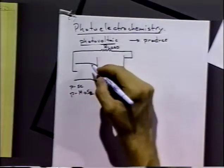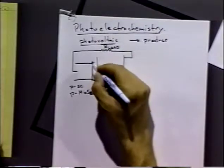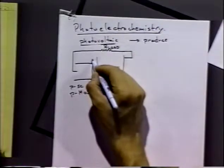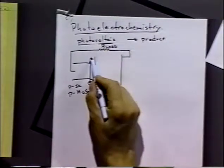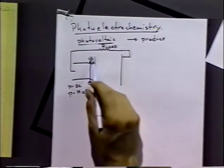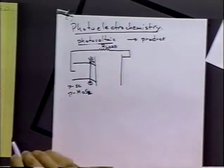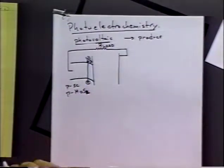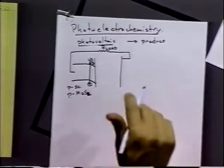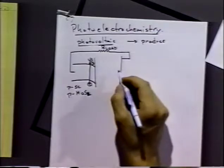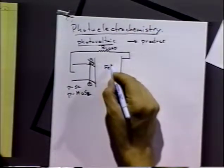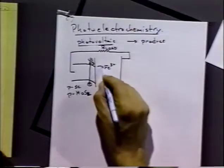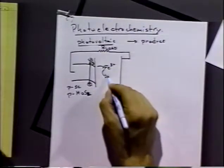Here in this case, we would get a promotion of electrons by light. And the electrons now will accumulate at the interface, which are now available. And it can take species, say, iron three plus,